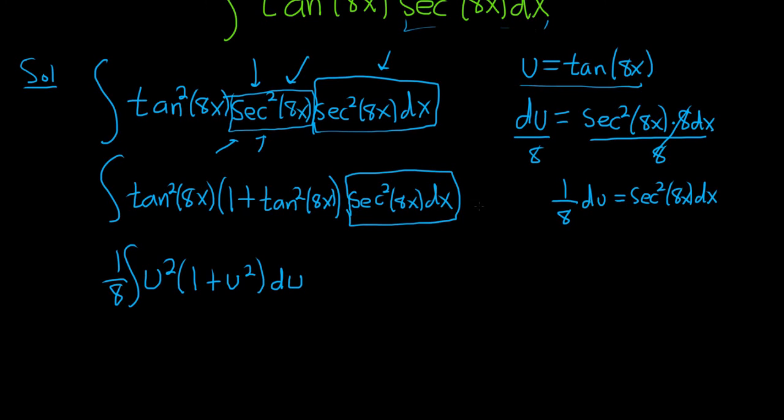Let's just double check that. So this is 1/8 du. Looks okay. All the tangents became u's. Let's go ahead and distribute. This is 1/8. So u squared times 1 is u squared, and then u squared times u squared is u to the 4th. We still have our du.